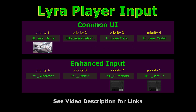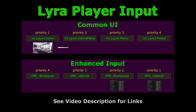Lyra uses both the Common UI and the Enhanced Input plugin to achieve its input. First, it sends input to Common UI. Any of the UI layers can consume the input from order of decreasing priority. Here, for example, in ui.layer.game, the Lyra HUD does not consume the input and instead allows it to flow to the Enhanced Input plugin.